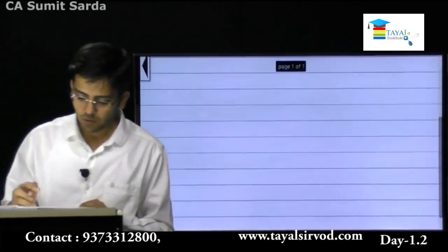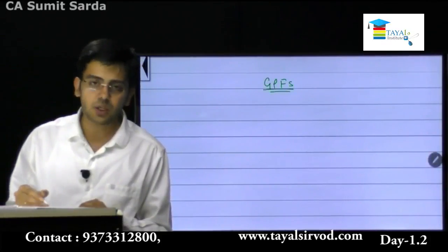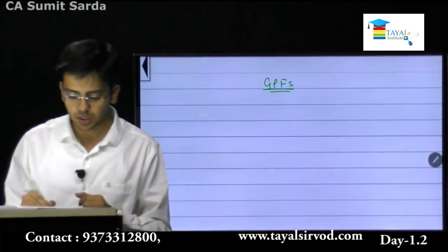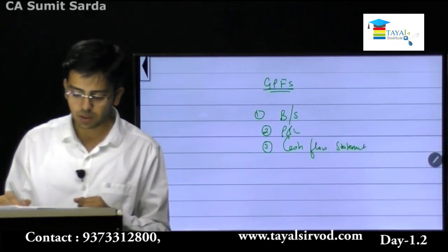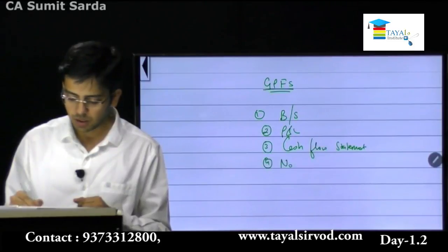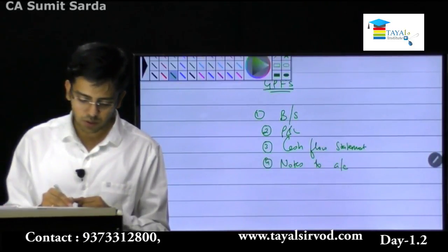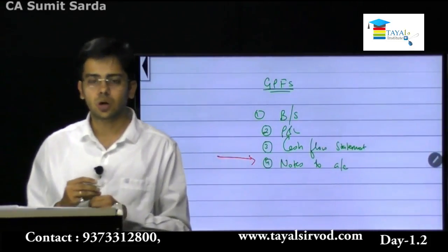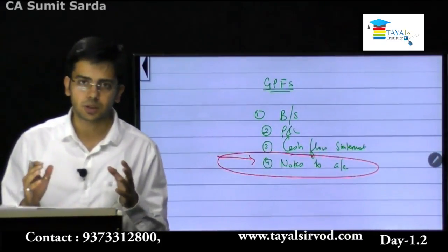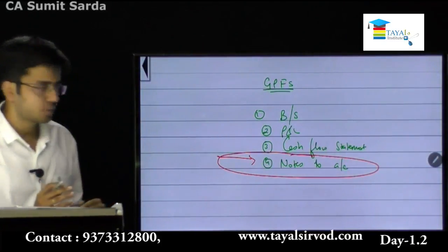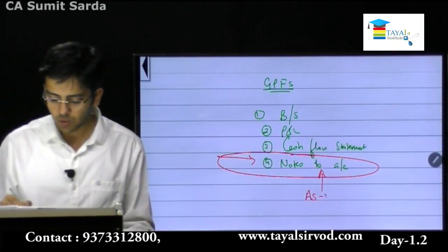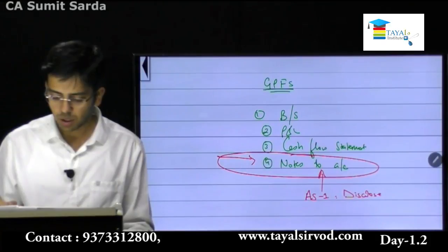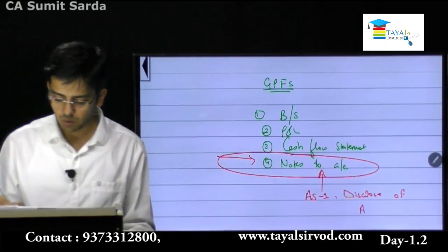What I have described are the disclosures that are required. Where do you show these disclosures? There are general purpose financial statements: the balance sheet, the profit and loss account, the cash flow statement for those to whom it is mandatory, and something called notes to accounts. This notes to accounts is where we deal with the disclosure aspect. It is under this notes to accounts that we are going to talk about AS1 - disclosing our accounting policies.